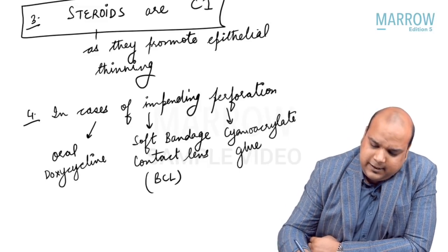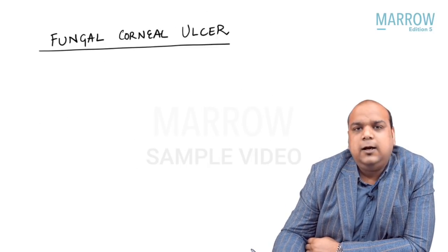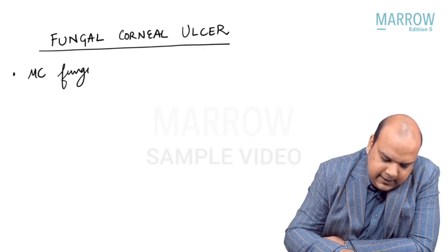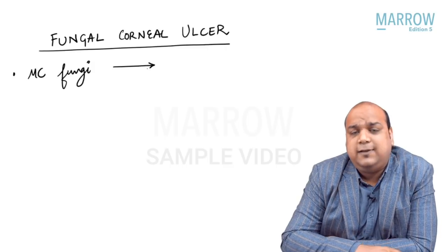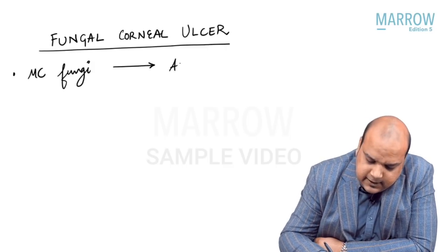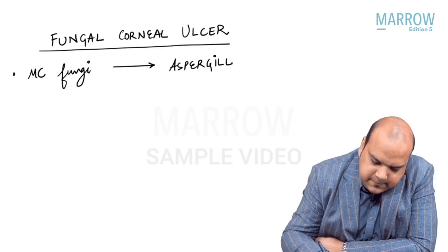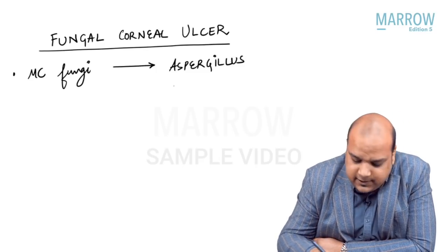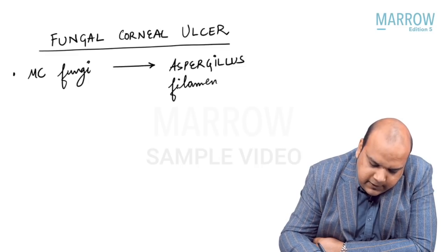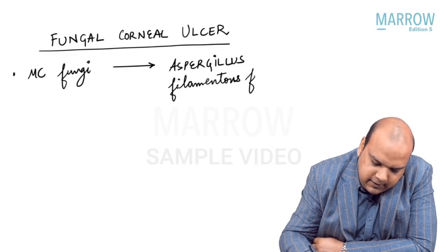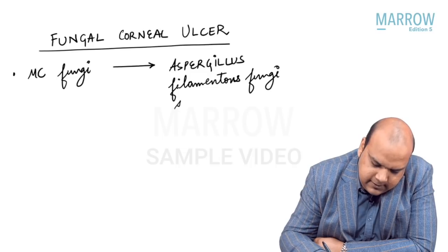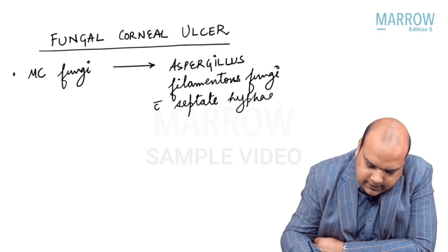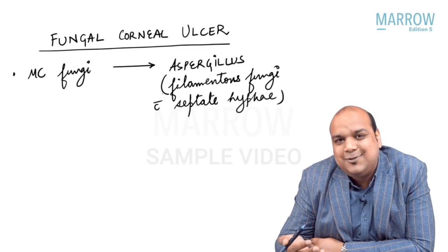Let's start with fungal corneal ulcer. The most common fungi associated with causation of keratitis or corneal ulcer is Aspergillus. Aspergillus is a filamentous fungi having septate hyphae. You have to remember this classification as they may give the group name instead of the specific name.